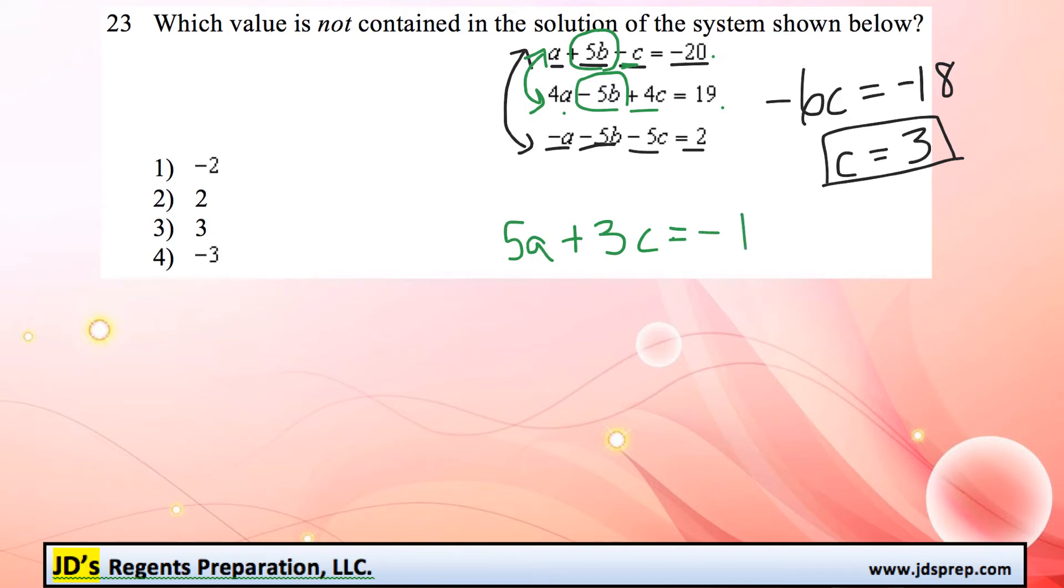So now we have an equation with two variables, so we wouldn't be able to solve it on its own. But don't forget, we already know that c is equal to 3. So we can, in fact, just replace c with 3.